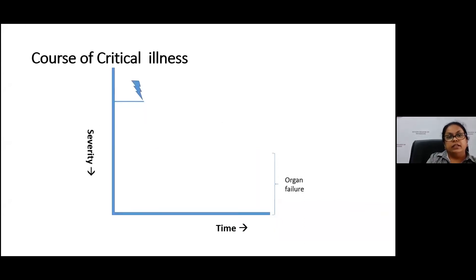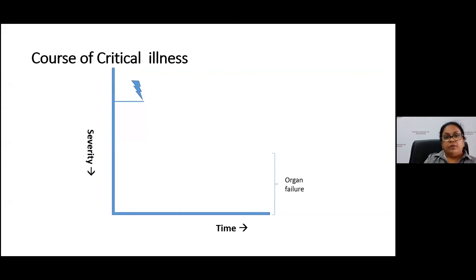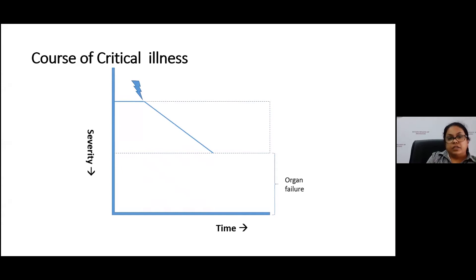Let's see the course of critical illness, because for us to use early warning scores it's necessary to understand what actually happens during the course of a critical illness. Here the x-axis denotes time and the y-axis denotes severity. As time goes on, the severity increases from the onset of an acute illness. If the illness is not attended or managed properly, the severity increases with time.